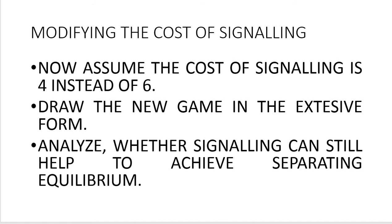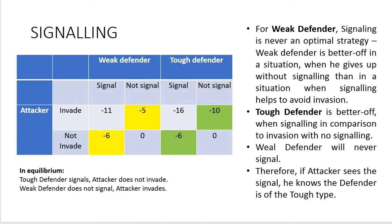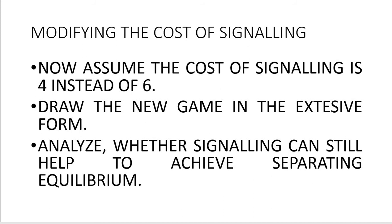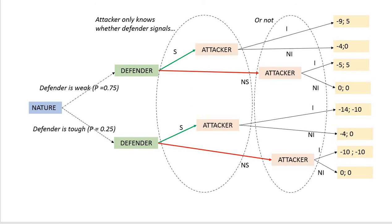To illustrate that everything depends on the cost of signaling, let's now assume the cost of signaling is 4 instead of 6. Please draw the new game in extensive form and analyze whether signaling can still help achieve separating equilibrium. You can use the same payoff table approach. Please pause and practice, as you will get a similar assignment this week.